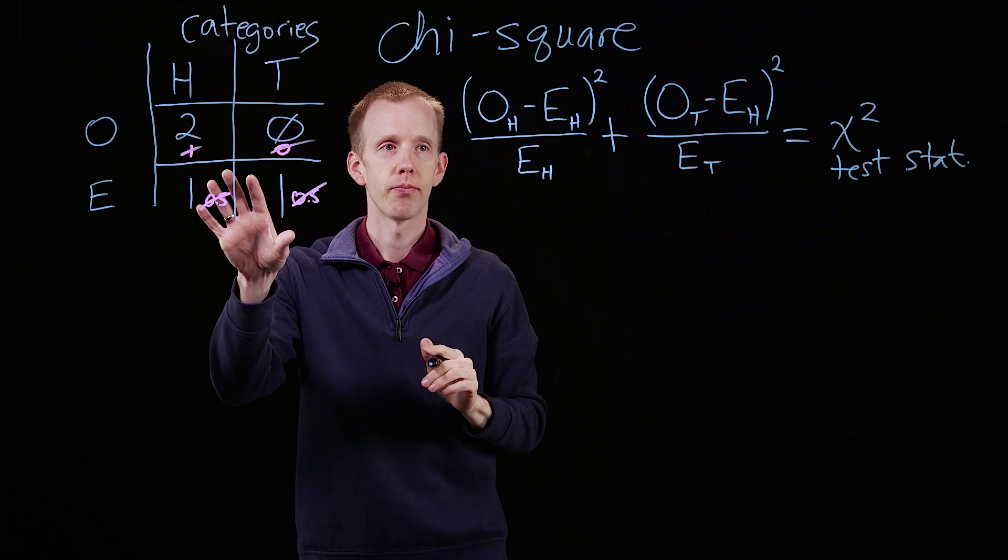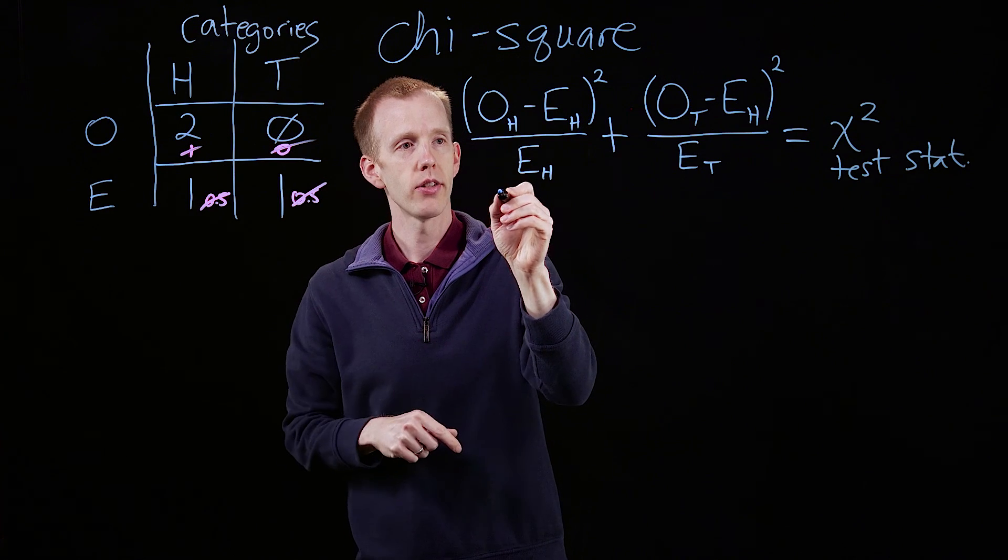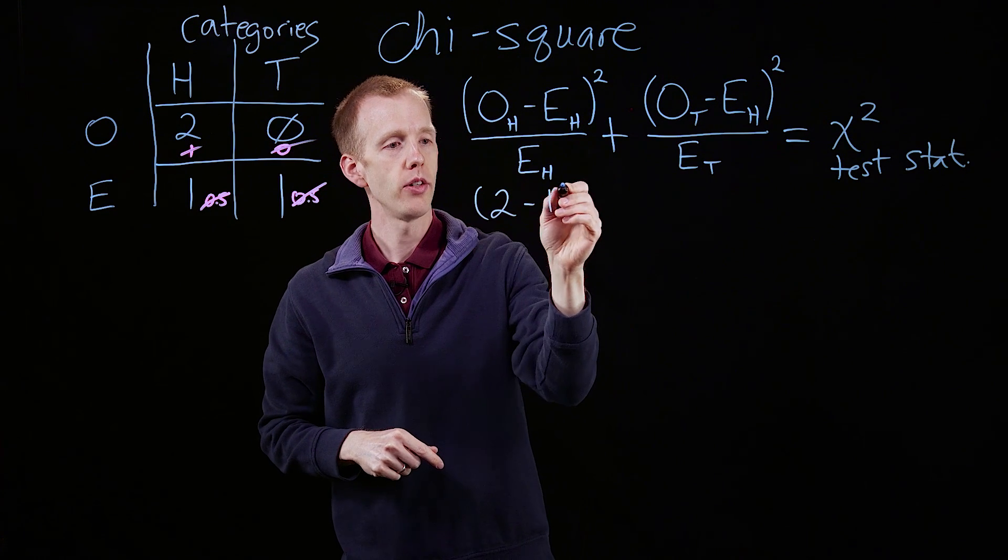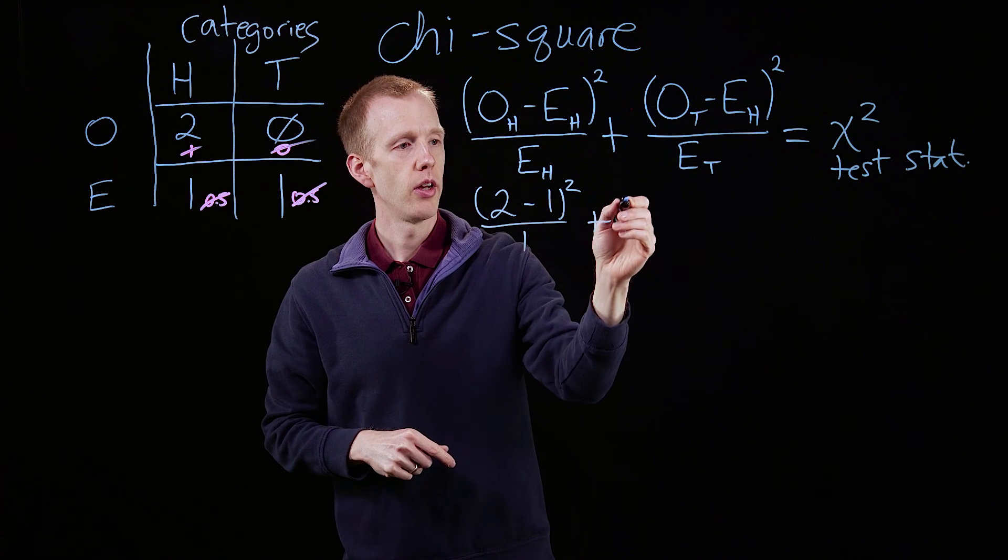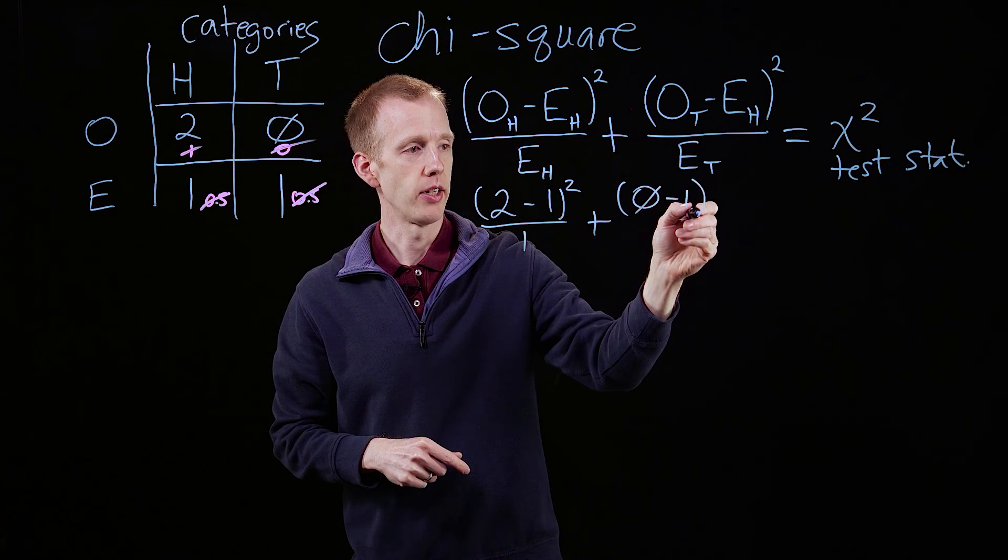So if we plug these numbers in, we get, we observed heads twice, expected once, and we observed tails not at all, expected to see one.